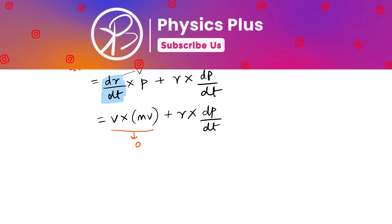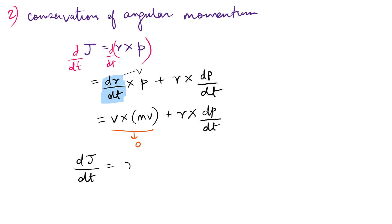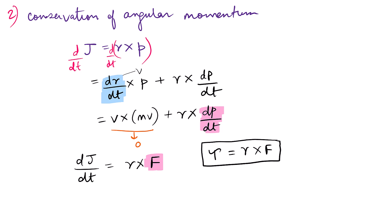The only remaining term gives us dJ/dt equal to r cross dp/dt. We know that dp/dt is F. Now, the moment of force or torque, represented as τ, is given by r cross F. This is an important relation to remember. Using this relation, we get τ equal to dJ/dt.